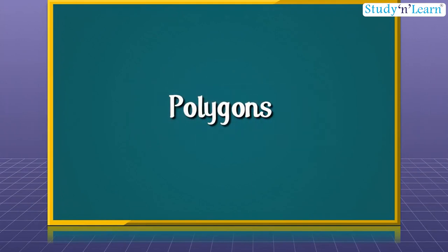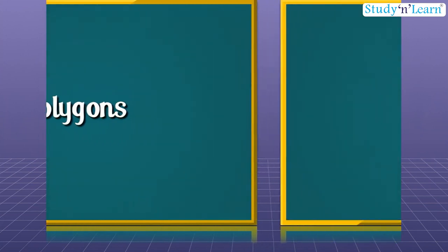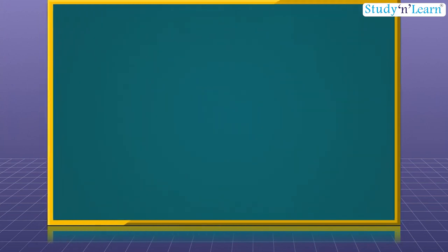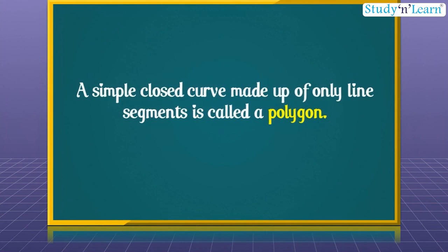In this module, we will discuss polygons and classification of polygons. First of all, let us see what a polygon is. A simple closed curve made up of only line segments is called a polygon.